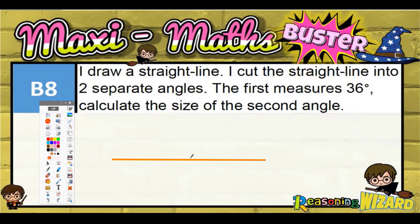Question eight: I draw a straight line. I cut the straight line into two separate angles. So let's say we put a point there and we do two separate angles. The first one measures 36°. Now 36° is less than the right angle, so we'll call that one 36°.